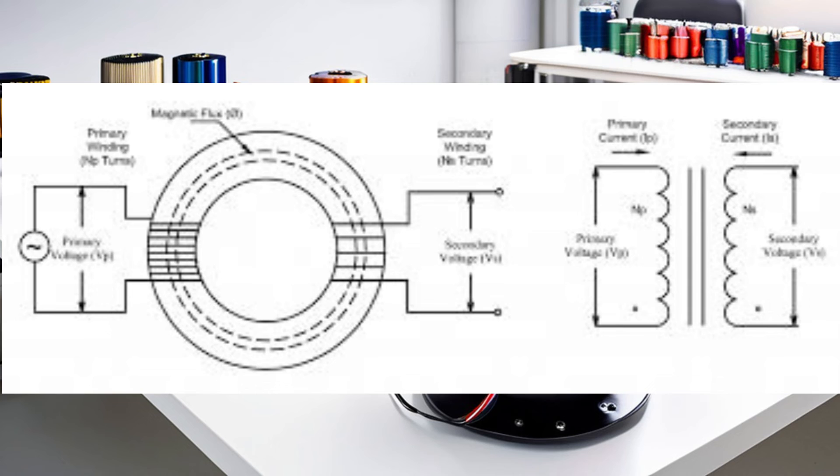Each component and each step in the process plays a crucial role in the function of a toroidal transformer. From the toroidal shape that lends itself to efficient energy transformation, to the primary and secondary windings that are responsible for the actual transformation, each element is essential.